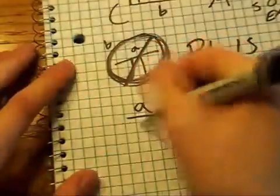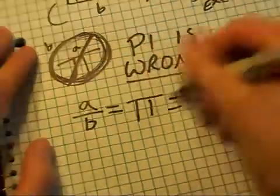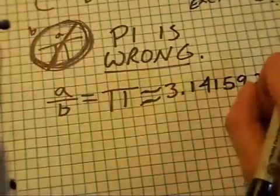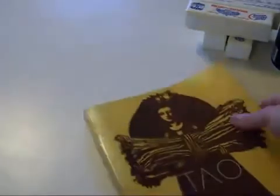I don't mean that Pi is incorrect. The ratio of a circle's diameter to its circumference is still 3.14 and so on. I mean that Pi, as a concept, is a terrible mistake that has gone uncorrected for thousands of years.